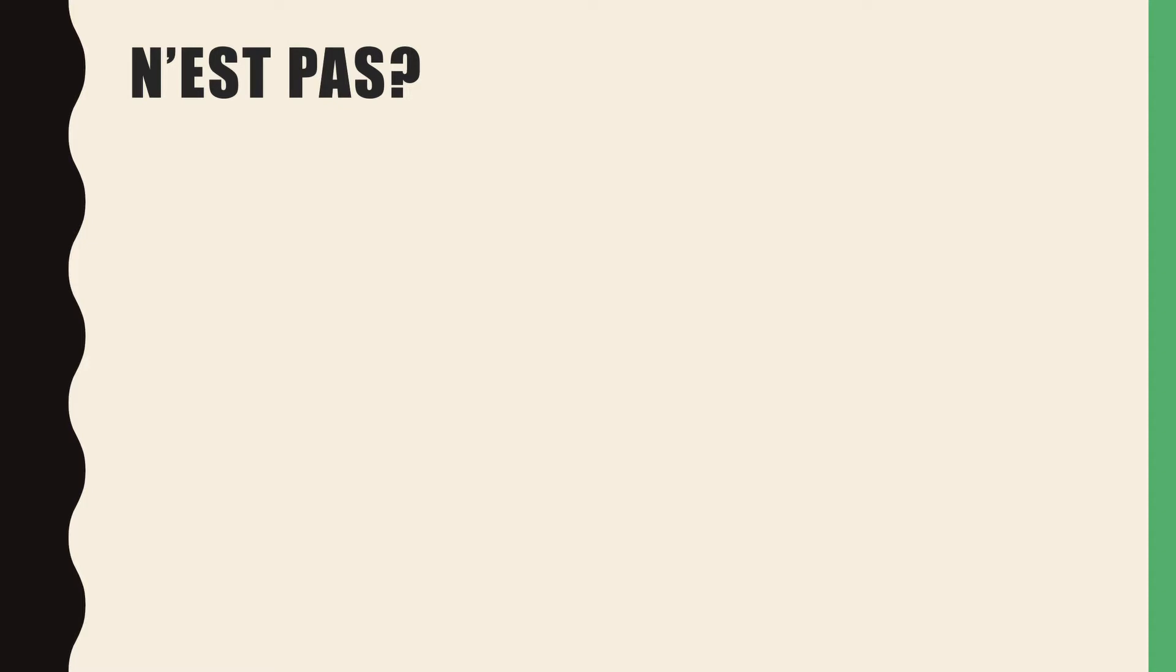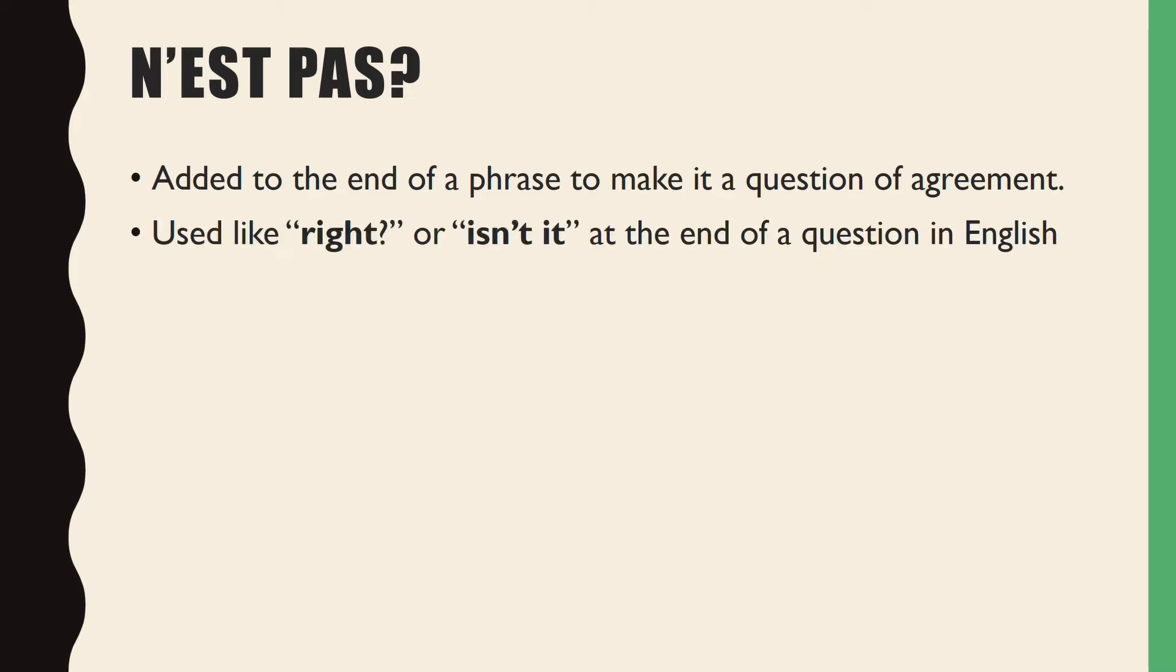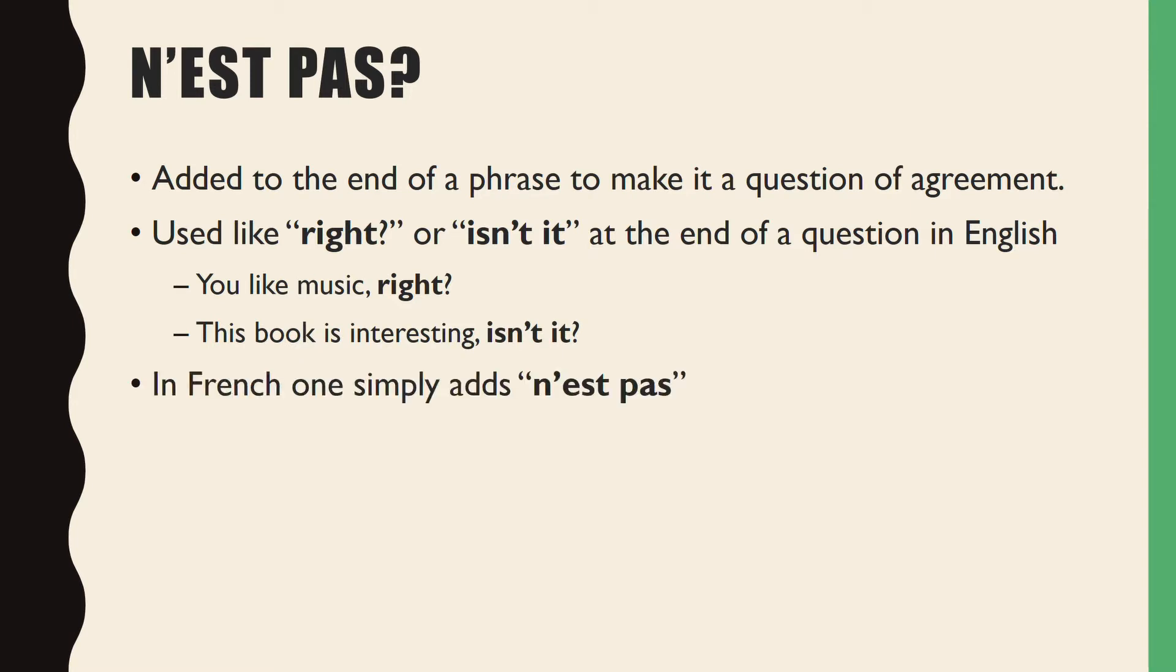Now we're moving on to n'est-ce pas, which is a quick way to check for agreement. It's added to any phrase. You're making it a question of agreement, like you would in English by saying right at the end of a sentence. You'd say n'est-ce pas in French, or isn't it, which is what it literally means. So an English example would be, you like music, right? Or this book is interesting, isn't it? In French, you just add n'est-ce pas. Tu aimes la musique, n'est-ce pas? Ce livre est intéressant, n'est-ce pas? And that's all it is. It's really good for conversational French whenever you're delving into your more complicated sentences. It's a way to ask if someone else likes music without having to ask it with an inversion or with est-ce que. You can just say n'est-ce pas at the end of your sentence, and you won't have to worry about all those complicated ways to make questions, which we'll delve into more completely in the next couple of weeks.